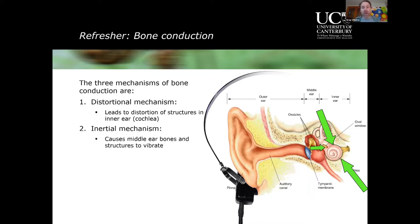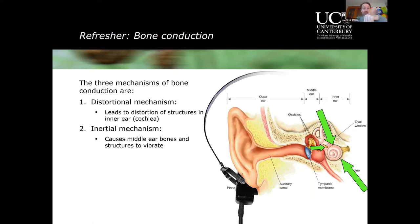That creates sound-borne vibration in the inner ear fluids, which is detected as sound by the cochlea. The second mechanism is the inertial mechanism: vibration of the skull and temporal bone causes movement, but the stapes footplate is loose and has mass, meaning it lags behind. This creates relative movement between the stapes footplate and the oval window, imparting sound-borne vibration into the cochlea fluids.